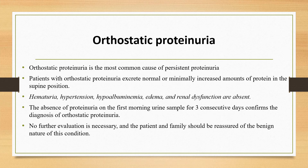The second type is orthostatic or postural proteinuria. This is the most common cause of persistent proteinuria in school-age children and adolescents, occurring in up to 60% of children with persistent proteinuria. Children with this condition are usually asymptomatic and it is discovered by routine urinalysis. Patients excrete normal or minimally increased amounts of protein in the supine position, but in the upright position urinary protein excretion may increase tenfold, reaching up to 1 gram per 24 hours. However, hematuria, hypertension, hypoalbuminemia, edema, and renal dysfunction are absent.